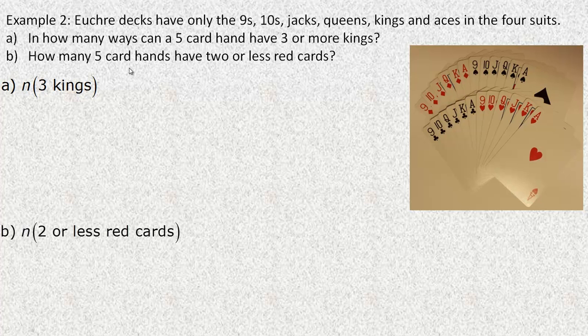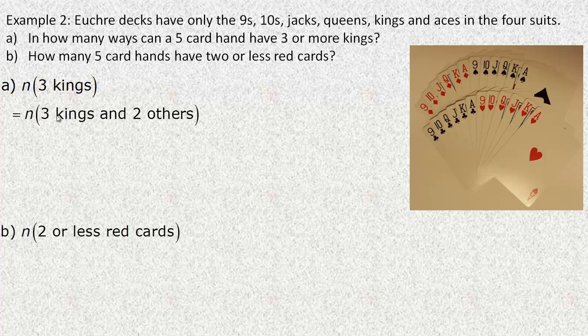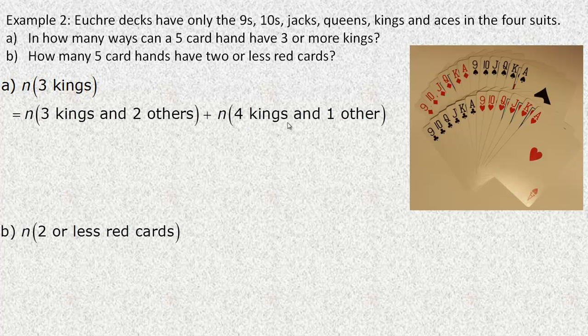There are two questions. The first asks: in how many ways can a five-card hand have three or more kings? Three or more kings — a lot of people forget about the other two cards; there are five cards altogether. So three kings means three kings and two non-kings. You could also have four kings and one other card. You can't get five kings because there are only four available.